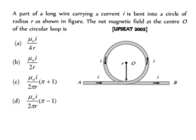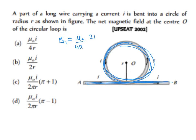Next problem: part of a long wire carrying current I is bent into a circle of radius R. Find the net magnetic field at center O. There are two segments — a circular loop and a straight conductor. B1 (due to the circular loop) = (μ₀/4π) × (2π × I/R) = μ₀I / (2R).